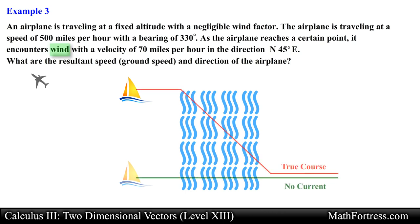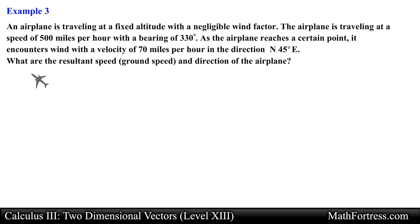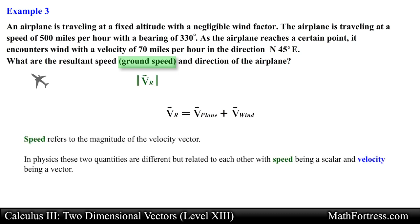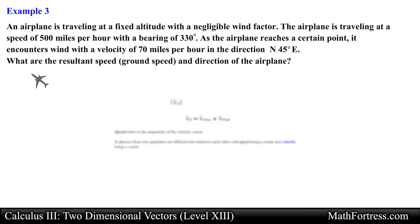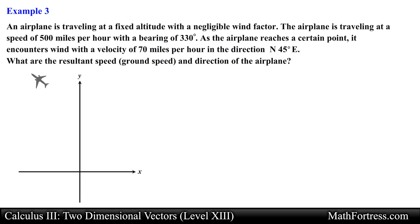We need to find the true course or track of the plane — the direction of the resulting velocity of the plane and wind — and the ground speed, which equals the magnitude of the resulting velocity. Note that speed is a scalar and velocity is a vector. Since this is an air navigation problem, the bearing is measured from north clockwise. A bearing of 330 degrees is represented accordingly, which is equivalent to 120 degrees measured from the positive x axis.